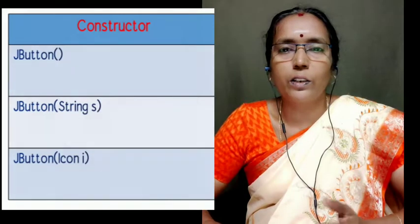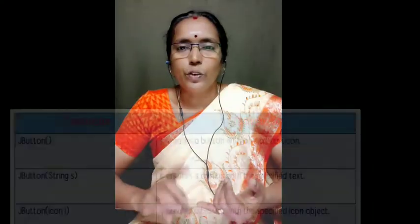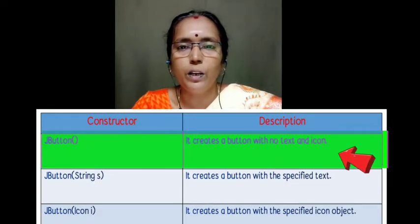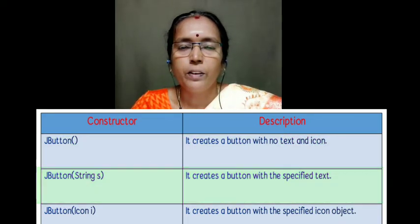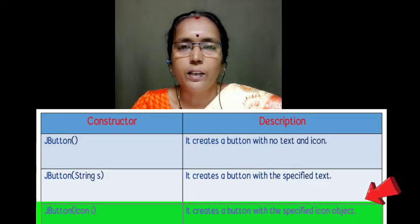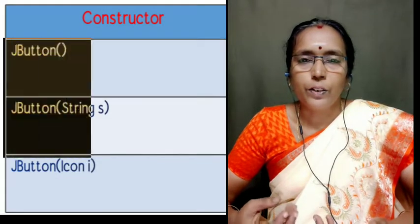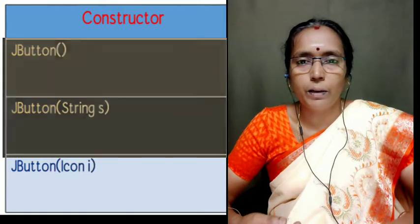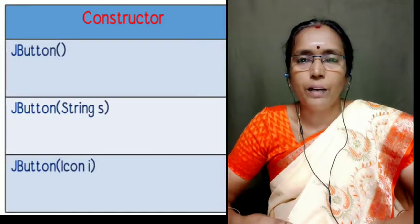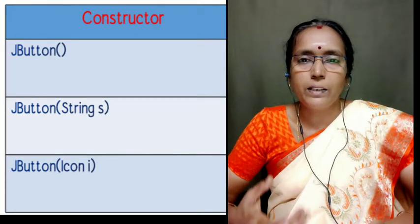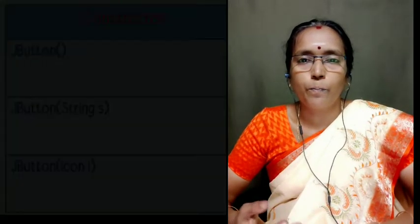For the JButton class there are three constructors. The first constructor creates a button with no caption. The second constructor creates a button with some caption. The third constructor creates a button control with an icon image. The first two constructors are also available in the AWT Button class, but the third constructor is not available there because we cannot place any image over the AWT button control.